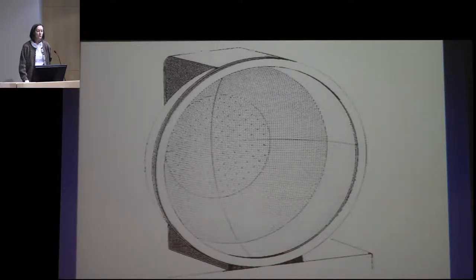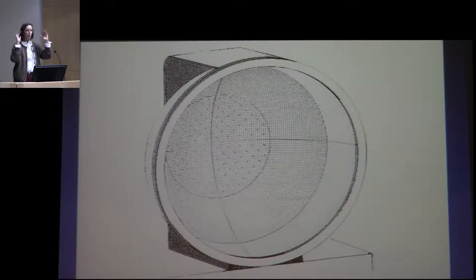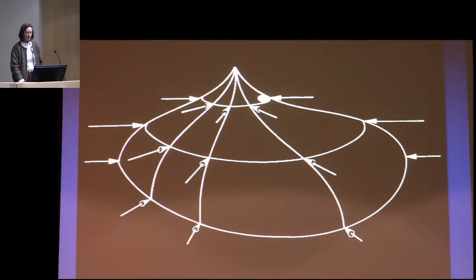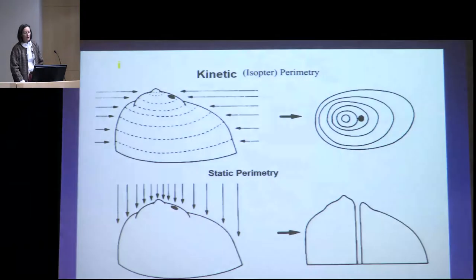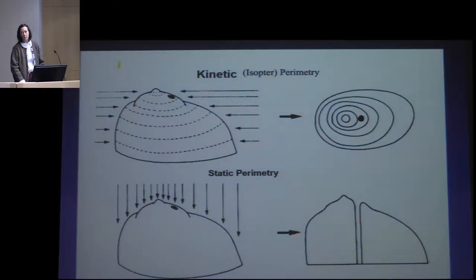The other way of doing visual field testing is with more formal testing methods, all of which employ some kind of bowl representing visual space around the patient. In kinetic perimetry, a moving target comes in toward the center at a specified brightness and size, and you join up those dots to create what's called an isopter of visual field.